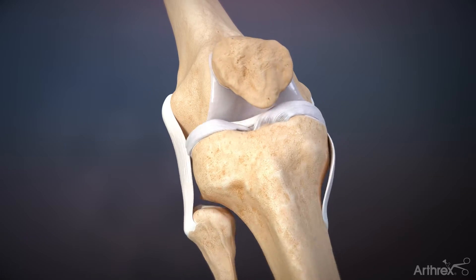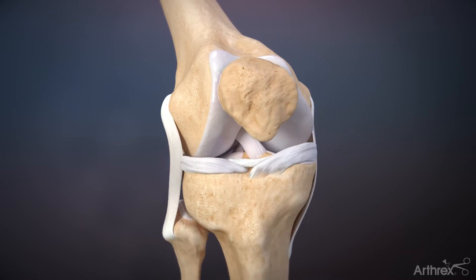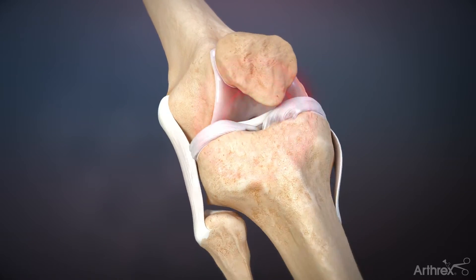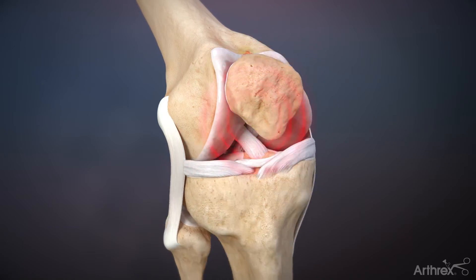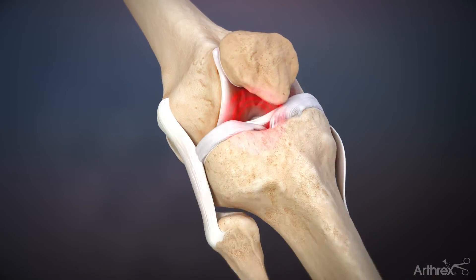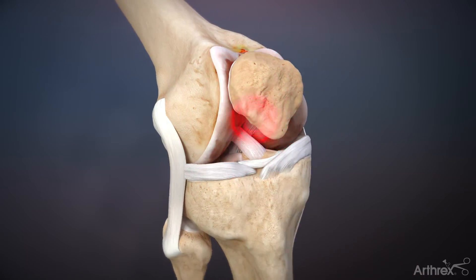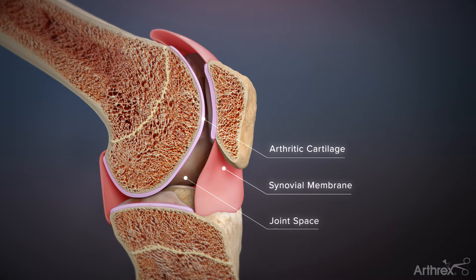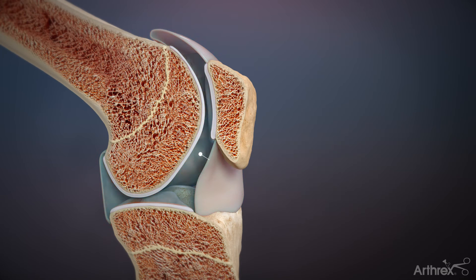The progression of osteoarthritis begins with an injury to the articular surface, which initiates a cascade of events that cause the breakdown of cartilage. In normal knee function, synovial fluid bathes the articular surfaces to reduce friction as they glide over one another. Synovial fluid also provides a cushioning effect to the joint.